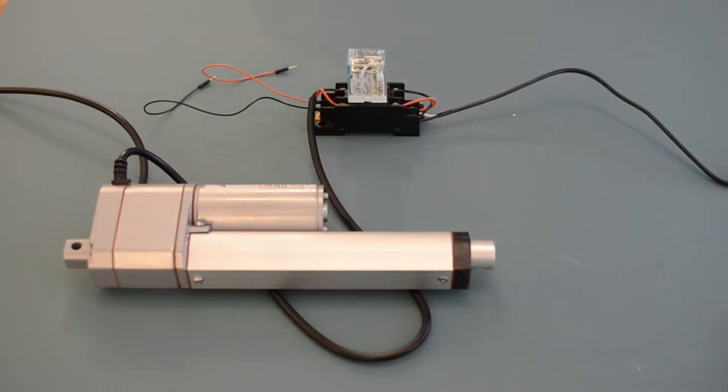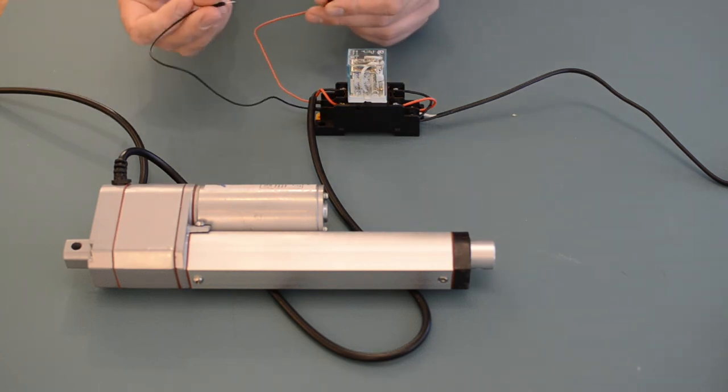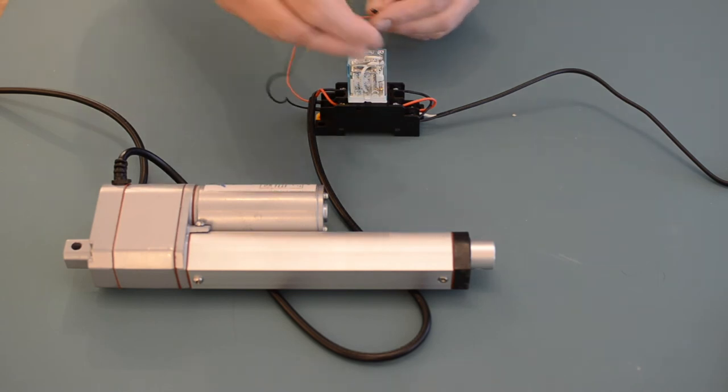Once you have this setup, you can simply energize the coil and your linear actuator will move. So I'm just going to use these leads to touch on the power supply side to energize my coil.